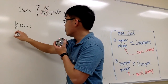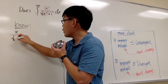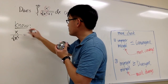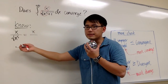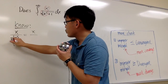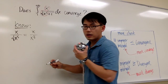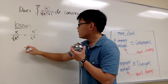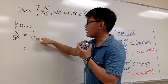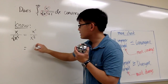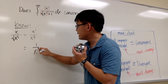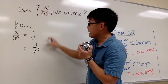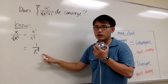Let me write down the expression first. We have x over the square root of x to the 5th power. On the top we just have x. On the bottom, the square root is like a 1/2 power, so we have x to the 5/2 power on the bottom. That gives us x to the first over x to the 5/2. Subtracting powers: 1 minus 5/2 is negative 3/2. So this expression behaves like 1 over x to the 3/2 as x goes to infinity.